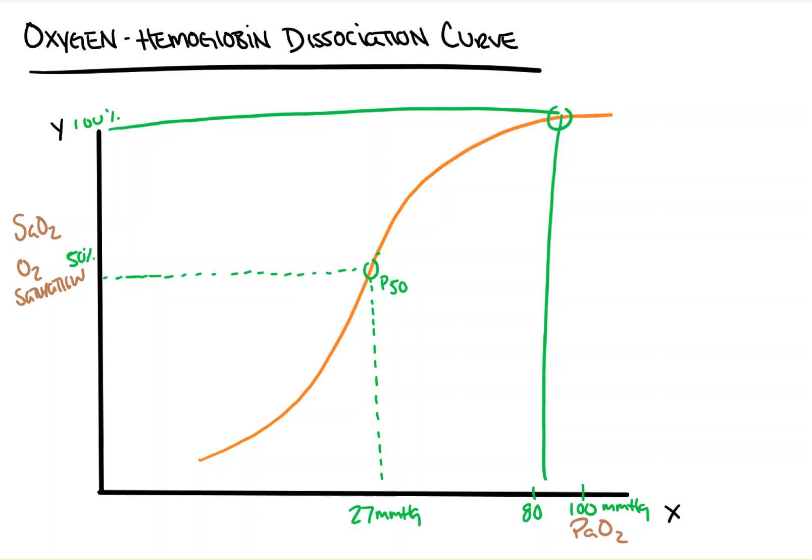Remember that this is called an oxygen hemoglobin dissociation curve because it depicts the partial pressure at which oxygen will dissociate from hemoglobin, which we need to happen in order to get it into tissues. It can't get into tissue if it's stuck to hemoglobin in the blood, right?